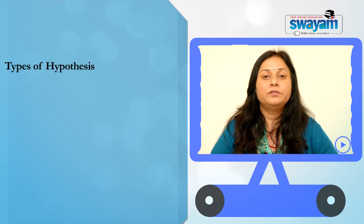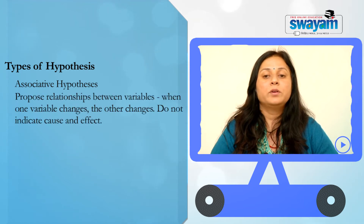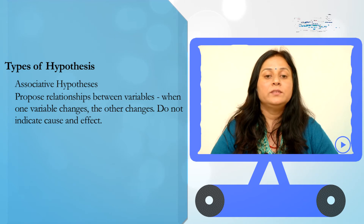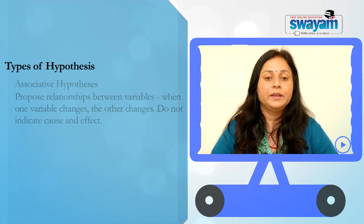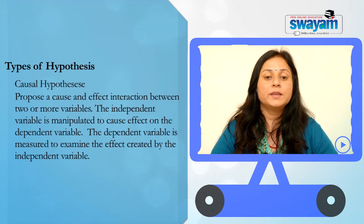Another type of associations are associative hypothesis and causal hypothesis. Associative hypotheses propose relationships between variables — when one variable changes, the other changes — but they do not indicate cause and effect.